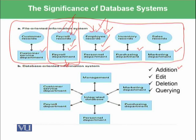However, the database-oriented information system is fully aggregated. The marketing department, purchasing department, personal department, payroll department, and customer service department are all integrated into one place — called the integrated database — which also has a management component that manages the database.